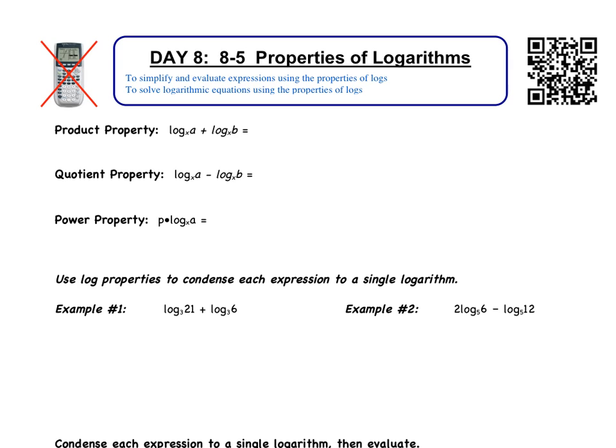Before we jump into any examples, let's write down what these properties are. The product property says if I'm adding two logs that have the same base — they both have log base x — this property only works if they're the same base. So if they are the same base and we're adding them, this becomes log base x of a times b. So the arguments become multiplied.